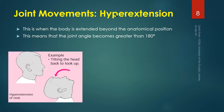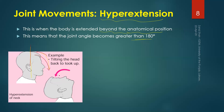Hyperextension is when the body part moves beyond the anatomical position, meaning the joint angle becomes greater than 180 degrees. For example, if your head is straight — that is its neutral position — when it moves forward, that is flexion. When it moves back to the straight position, that is extension. When it moves beyond that neutral position, that is hyperextension.